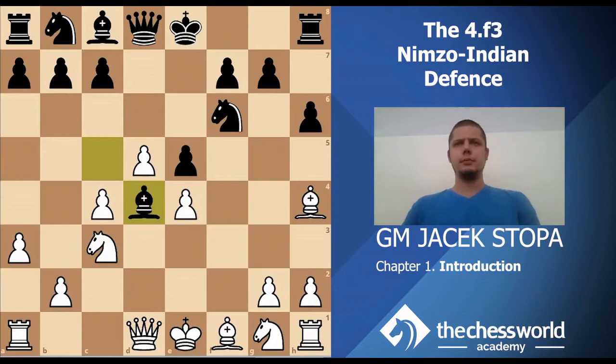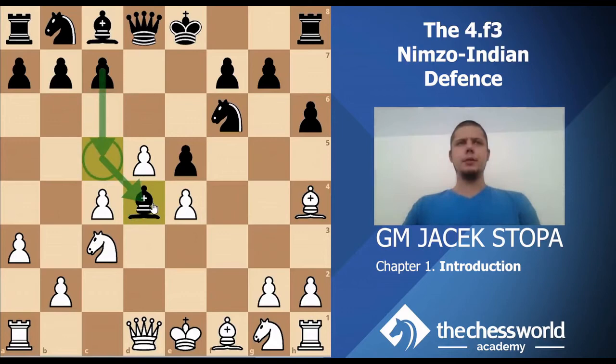Then comes bishop d4 — this is what I was talking about. This bishop obviously looks really good on d4. If Black can follow this up with c5, making a strong outpost for the bishop, that really fares well for Black.